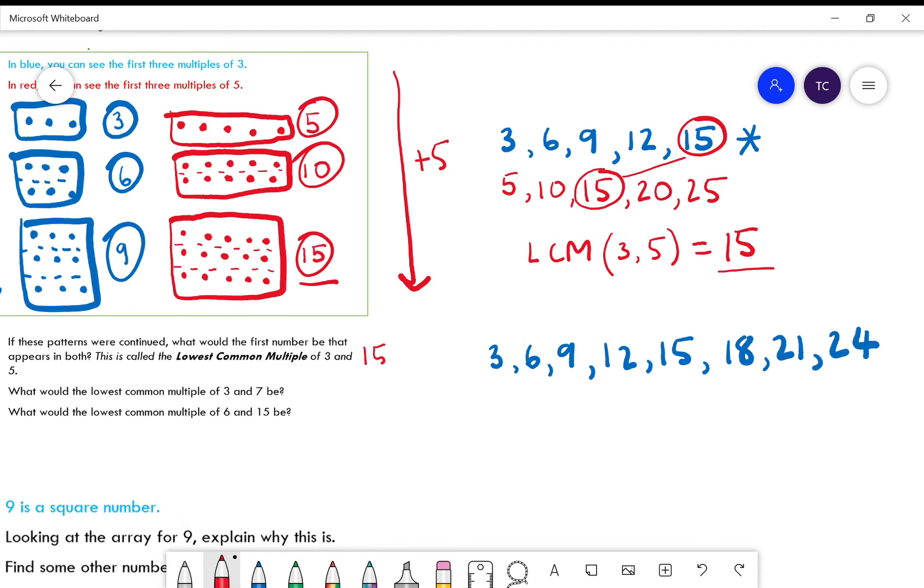And then we've got the multiples of seven. You might have spotted already what it's going to be, so we've got 7, 14, 21. And then we've got 21 there, we've got 21 in both of those.